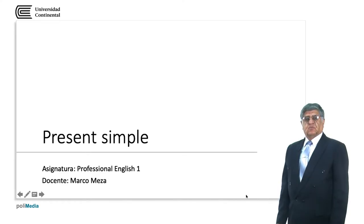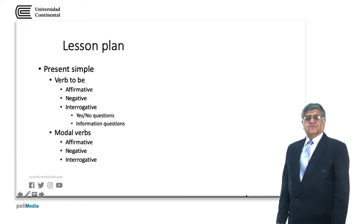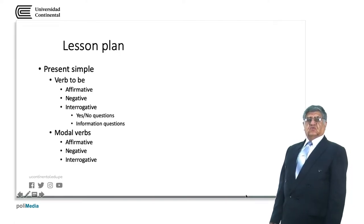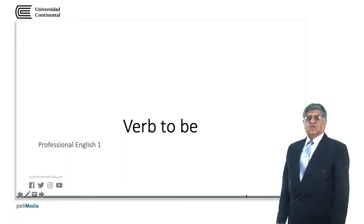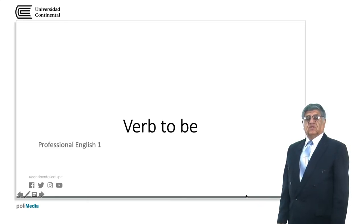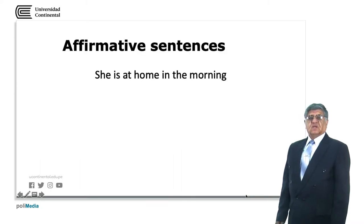Hello and welcome back to Present Simple in the Professional English 1. We are going to deal with the verb 'to be' in the affirmative, negative, and interrogative form. We are going to work with yes-no questions and information questions with interrogative words, and we are going to do the same with modal verbs. The verb 'to be' is considered one of the most complex verbs in the Present Simple because it has three forms, compared to other verbs that will have two, or modals that will have one.